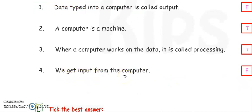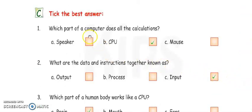Next, we get input from the computer. No, it is wrong. We get output from the computer. Input we enter into the computer. So it is false, so you have to write F for false.